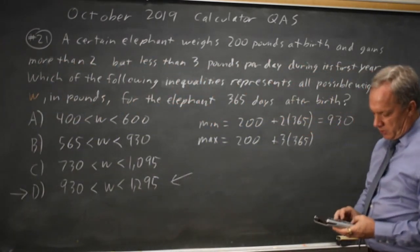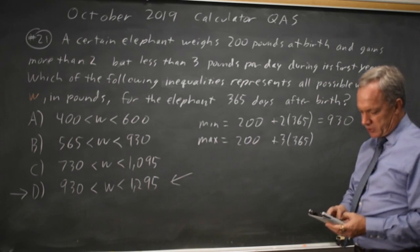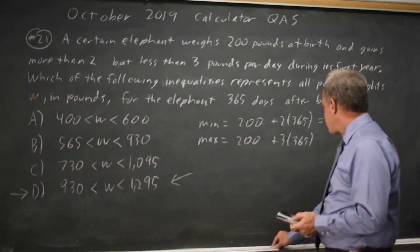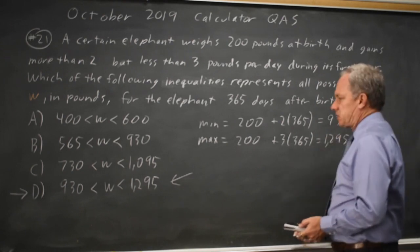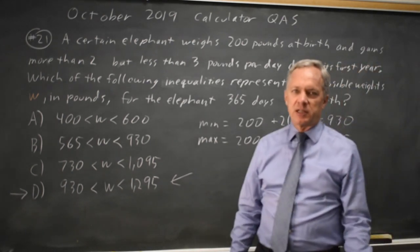And our max is 200 plus 3 times 365 is 1295, which is the maximum given in choice D.